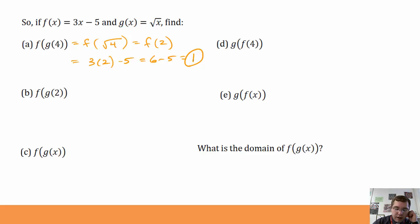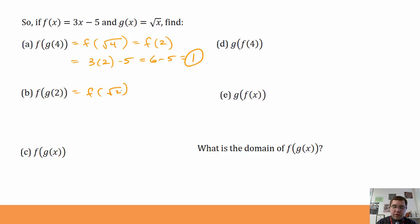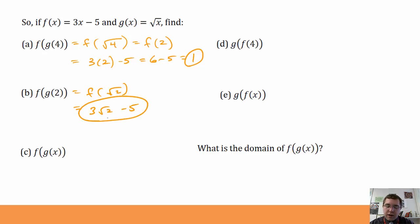Part B: f of g of 2. Same process — g of 2 means the square root of 2. This gives us f of the square root of 2, which means 3 times the square root of 2 minus 5. So it's just 3 radical 2 minus 5. I can't simplify that any further.